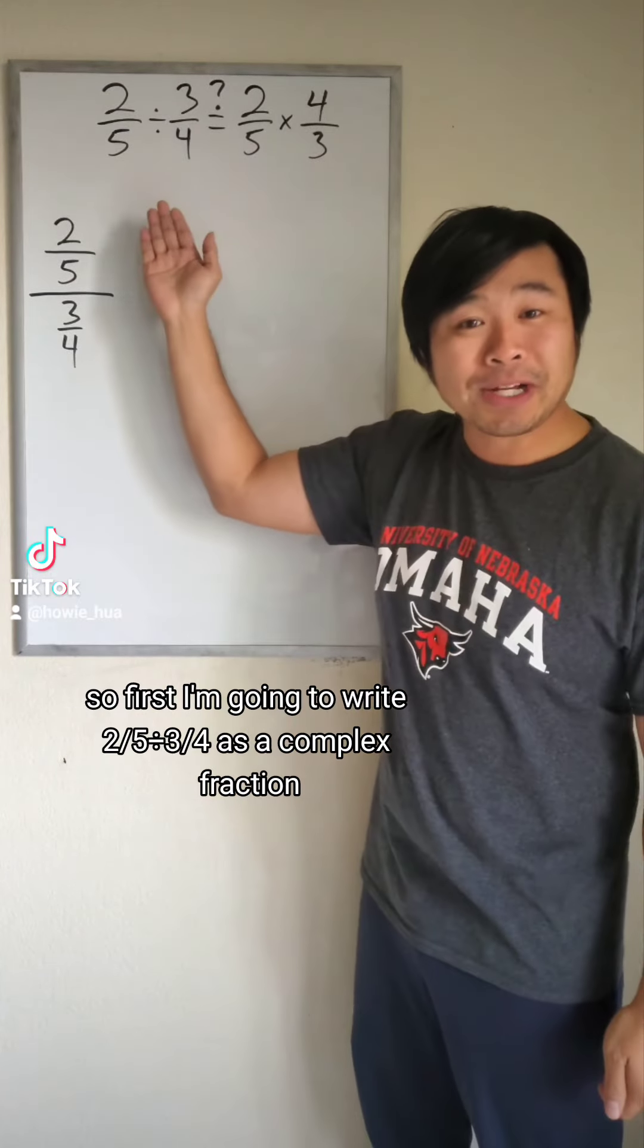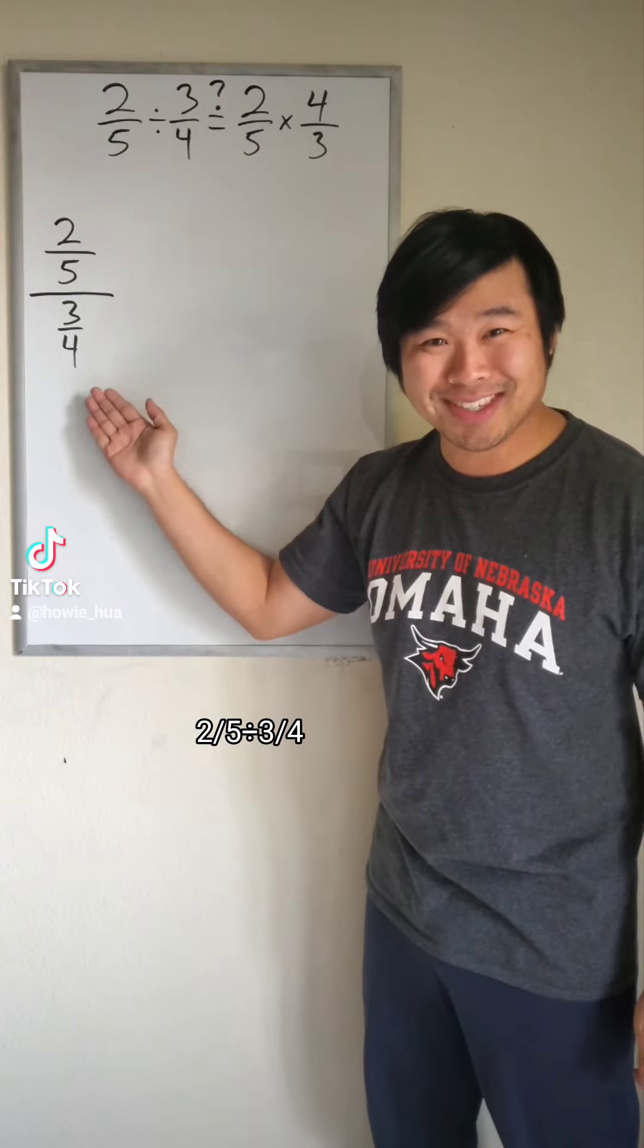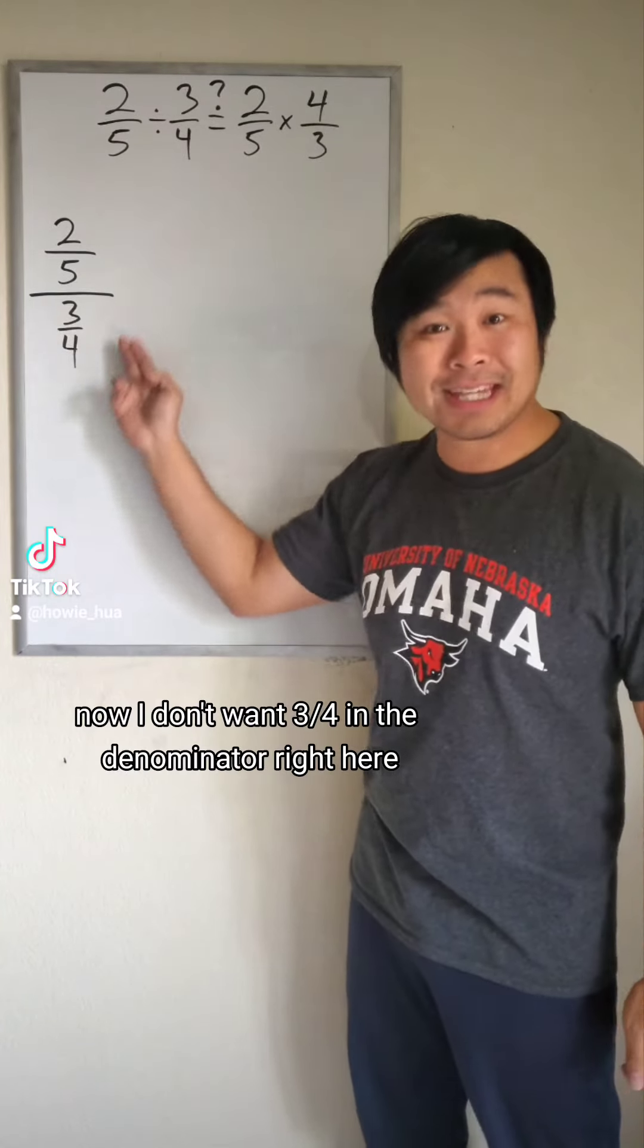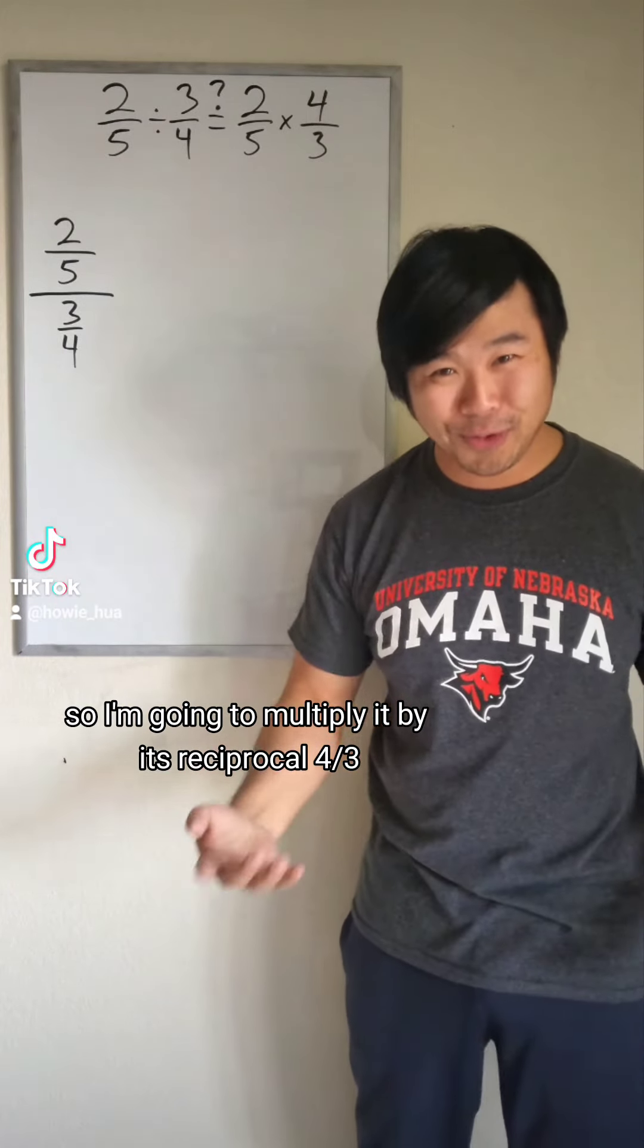So first I'm going to write 2 fifths divided by 3 fourths as a complex fraction. 2 fifths divided by 3 fourths. Now I don't want 3 fourths in the denominator right here, so I'm going to multiply it by its reciprocal, 4 thirds.